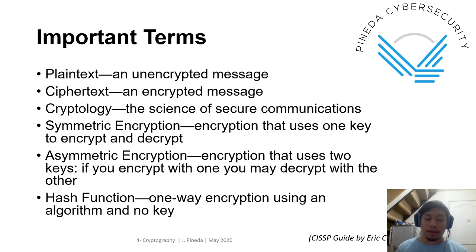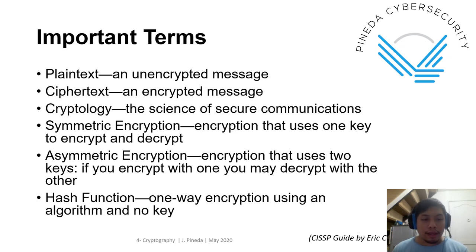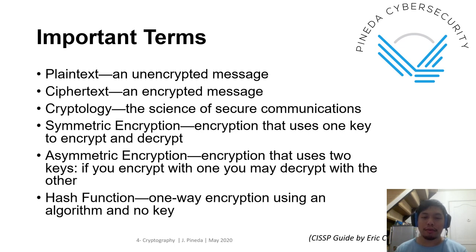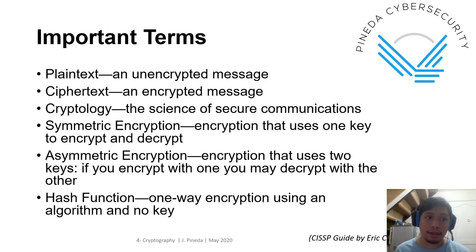We have three types of encryption algorithms. The first is symmetric encryption — an algorithm that uses one key to encrypt and decrypt. The second is asymmetric encryption, which has two keys: the first key is used to encrypt and the second one to decrypt. The third is the hash function — a one-way encryption using an algorithm and no key, and you cannot decrypt a hash function.